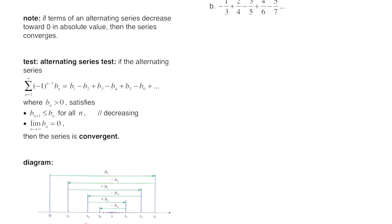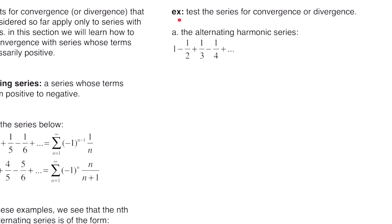Here's a diagram that represents this visually. Starting at 0, b sub 1 is positive, bringing you to s sub 1, the first partial sum. Since b sub 2 is negative you go to the left, and adding b sub 1 and negative b sub 2 gives you the second partial sum. Then b sub 3 is positive so it bounces to the right for the third partial sum. You can see it going back and forth, converging toward the total sum, so the alternating series converges.